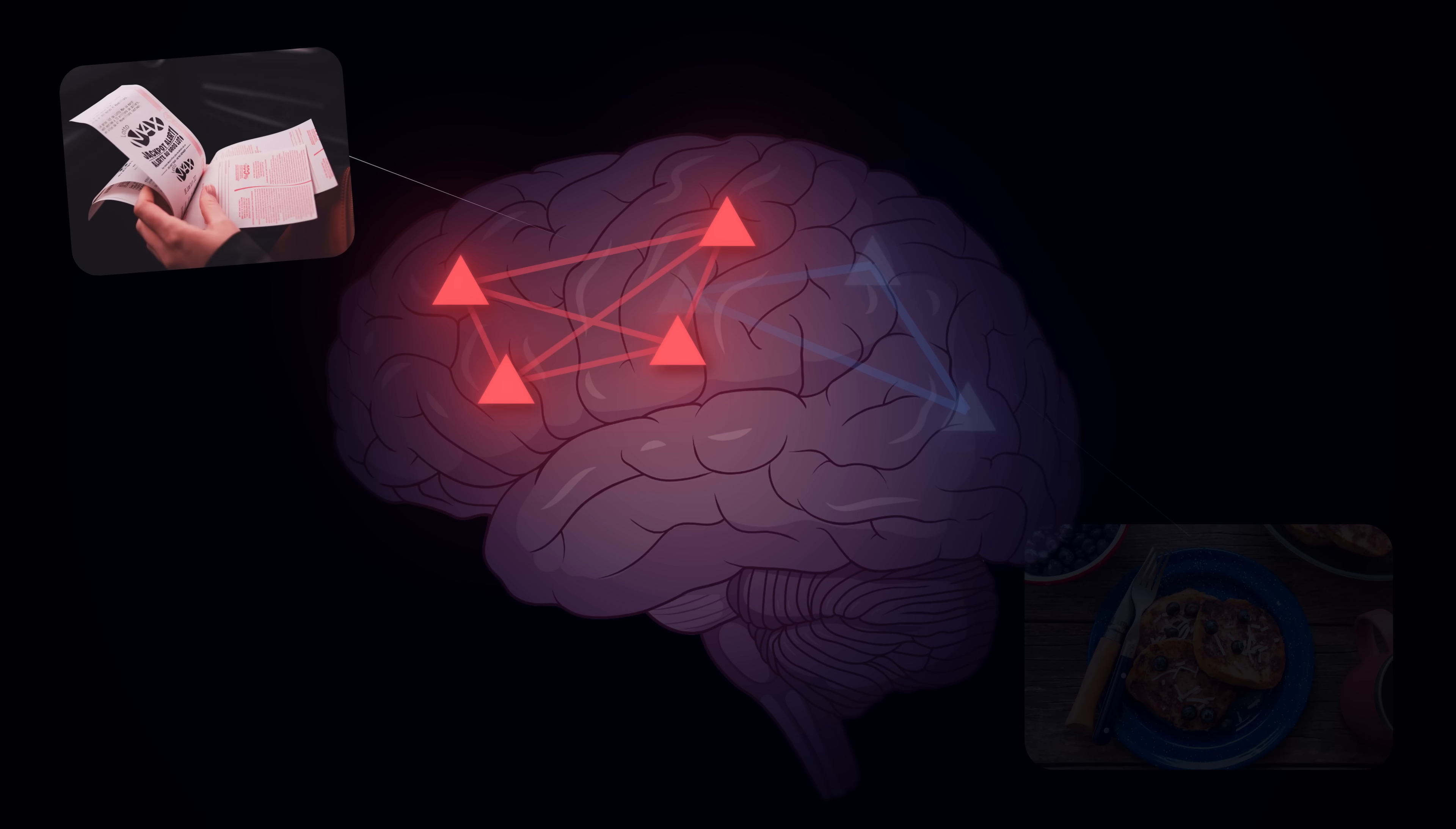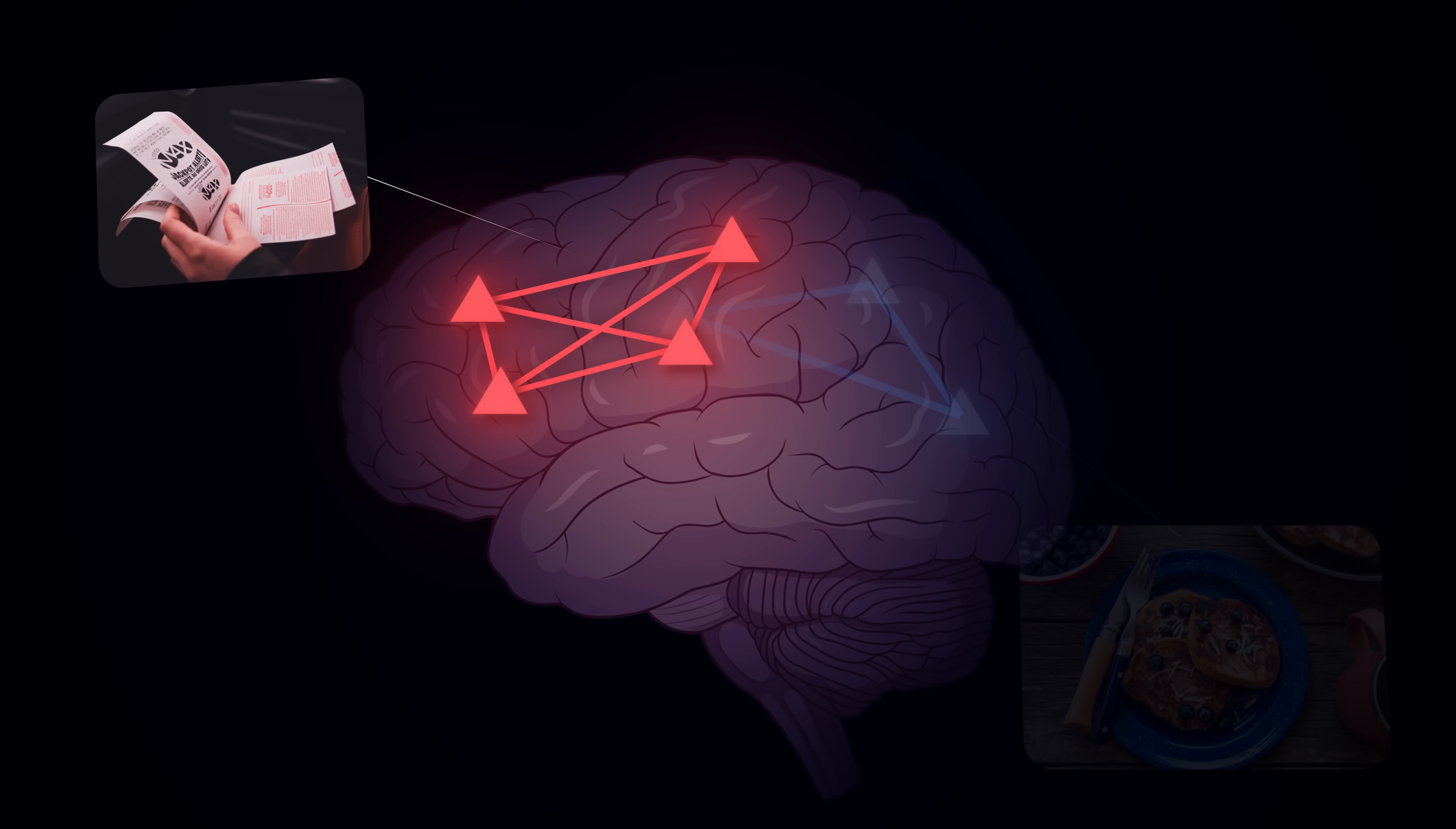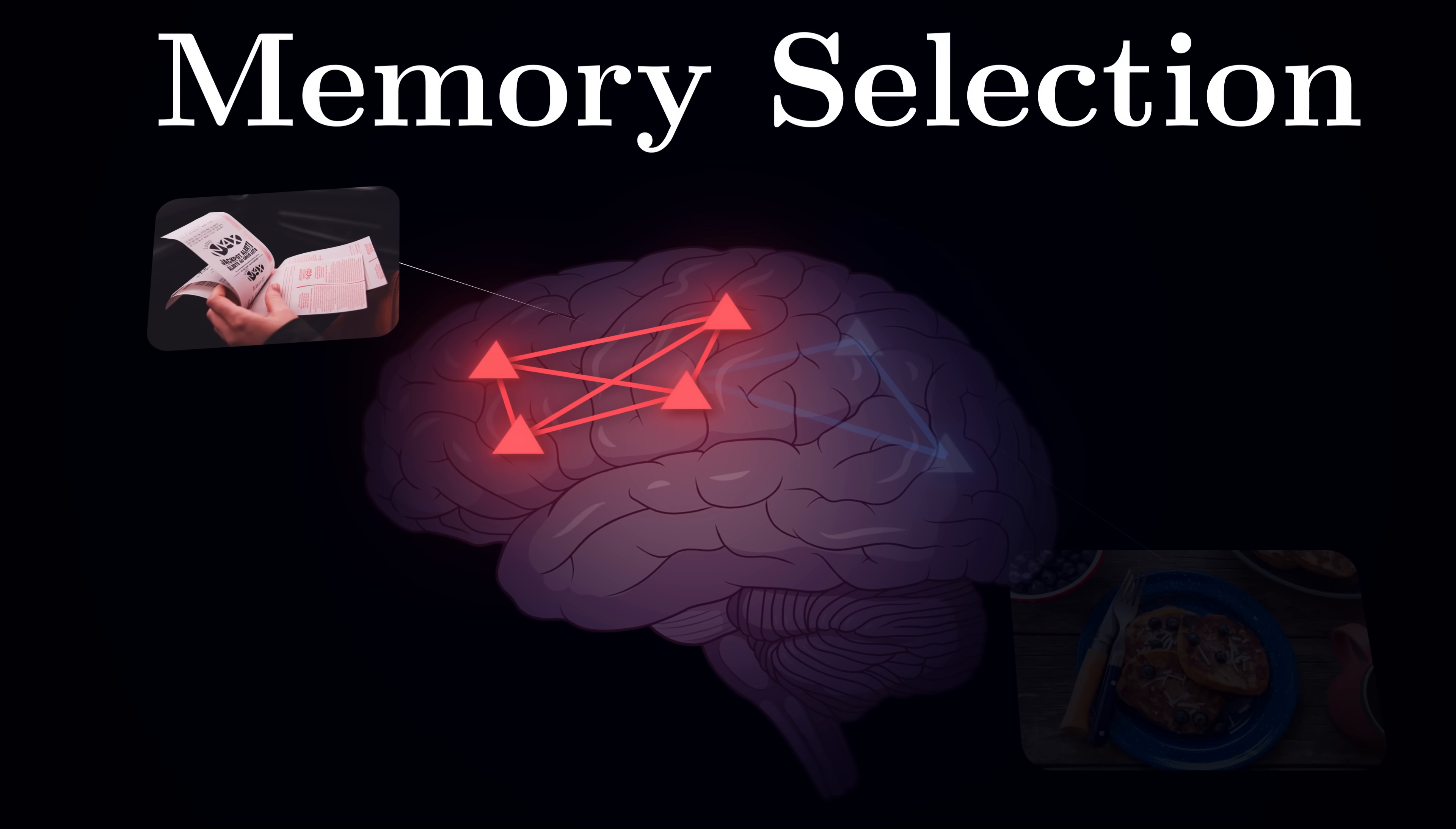Yet, if you win a lottery today, that memory would stay with you for the rest of your life. This remarkable ability to distinguish between everyday moments and life-changing events reveals one of the brain's most intriguing features – a system for memory selection. But how exactly does the brain make these crucial decisions? And how does this selection take place?